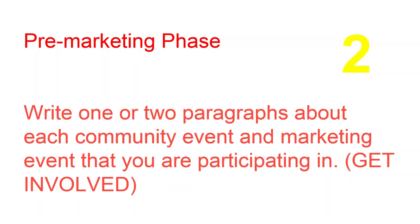In the pre-marketing phase, decide which events or activities you're going to do, and write one or two paragraphs about each community event or marketing item you participate in. You can dictate it into your phone — whatever you have to do, just get a paragraph down. You need to be getting involved in your local community, and you need one to two paragraphs about all the things coming up in October that your organization is participating in.